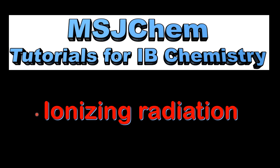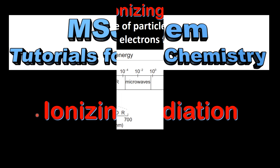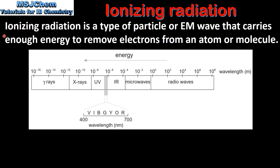This is MSJChem. In this video I'll be looking at ionizing radiation. Ionizing radiation is a type of particle or electromagnetic wave that carries enough energy to remove electrons from an atom or molecule.